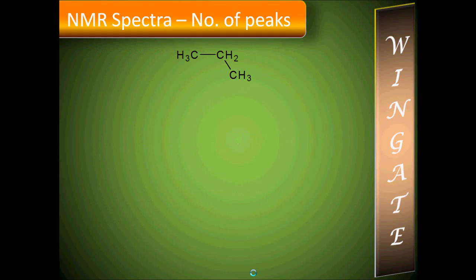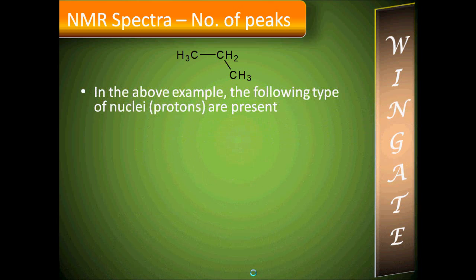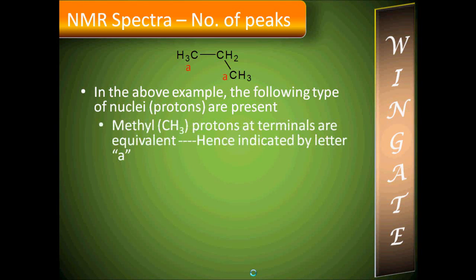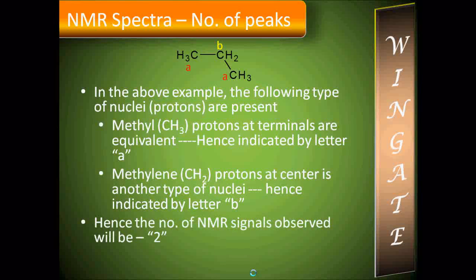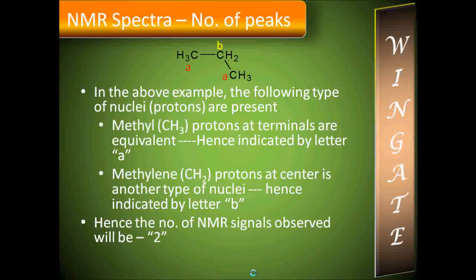Let us start with a small example: n-propane. The methyl protons at the terminals are equivalent and indicated by letter A, and the methylene protons at the center are another type of nuclei indicated by letter B. The total number of NMR signals is therefore 2.